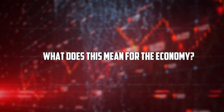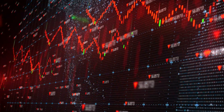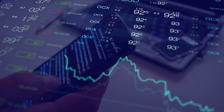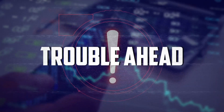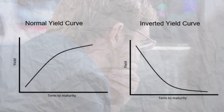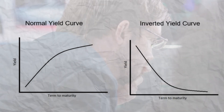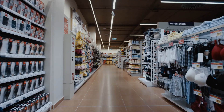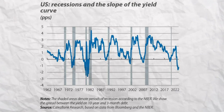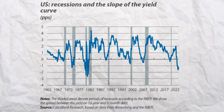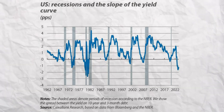Think of a yield curve inversion as the financial market screaming trouble ahead. An inverted yield curve signals that investors expect the economy to slow down — businesses cut back, consumers spend less, and recessions often follow. In fact, every U.S. recession in the past 50 years was preceded by this warning sign.